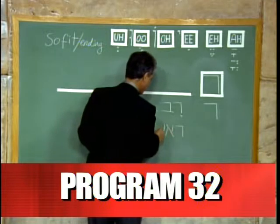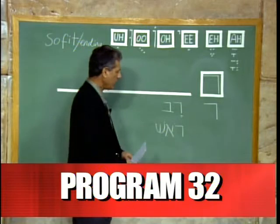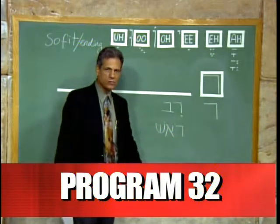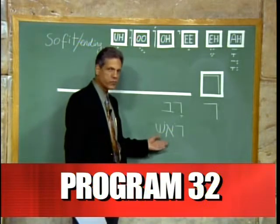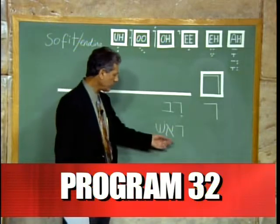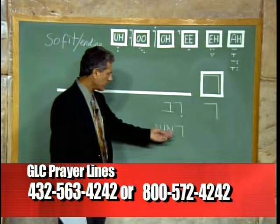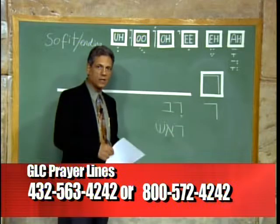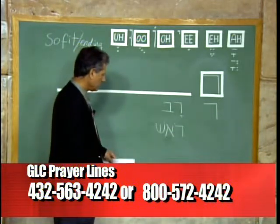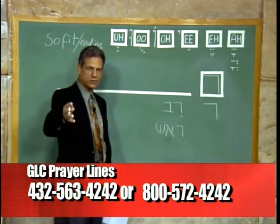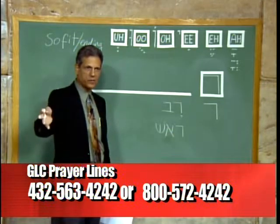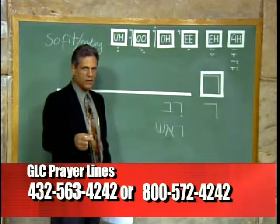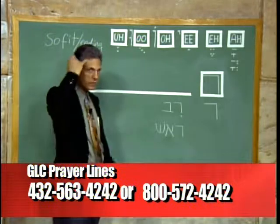This word: we have a Resh with an O sound — a dot on top means O — and an Aleph that has no vowel, so we can't hear it, it's a silent letter. And a Shin. That is read Rosh. Rosh is a head. So when we say Rosh Hashanah, that's the head of the year — the Jewish new year. Rosh is utilized in the Bible many times as the head or the leader, and it's also the physical head.